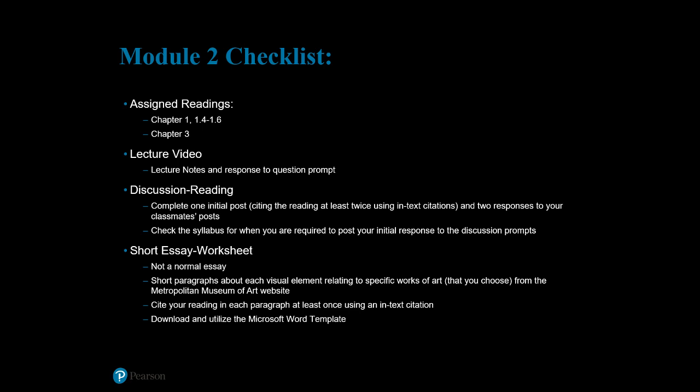Don't forget you have your short essay worksheet for this module. This is not a normal essay — you won't have an introduction or a conclusion, but you will be responsible for writing concise paragraphs about each of the visual elements relating to specific works of art that you've selected from the Metropolitan Museum of Art website. You'll need to cite your reading in each paragraph at least once using an in-text citation, and complete the works cited page at the end. Download and utilize the Microsoft Word template provided in Canvas.